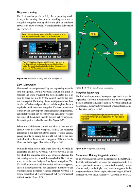When turn anticipation is used, the aircraft does not fly directly over the active waypoint. Rather, the computer commands a turn that rounds the corner to some degree, giving priority to having the aircraft roll out on the new desired track to the new active waypoint. Turn anticipation occurs only when the active waypoint is designated as a flyby waypoint — one for which the computer uses a less stringent standard for determining when the aircraft has reached it. By contrast, some waypoints are designated as flyover waypoints. The FMS will not use turn anticipation for a flyover waypoint; instead, the navigation will lead the aircraft directly over the waypoint. A missed approach waypoint is a typical example of a flyover waypoint.